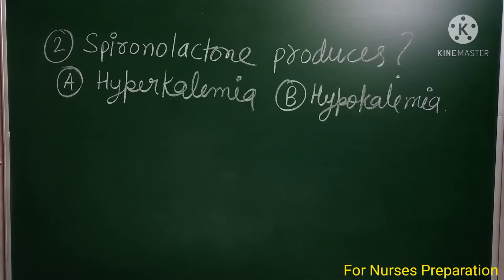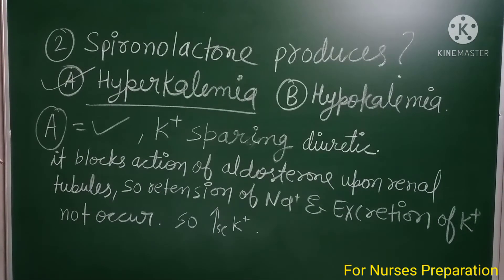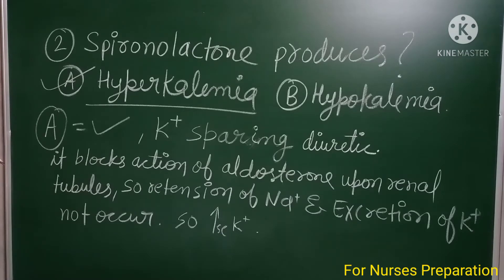Spironolactone is a potassium-sparing diuretic drug — this is a very important question. Option A is the right choice. Spironolactone drug can develop hyperkalemia. Hyperkalemia means the potassium level will increase, which is a very important element for our heart.